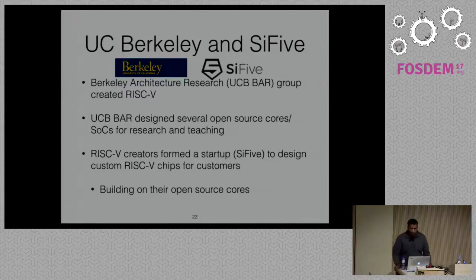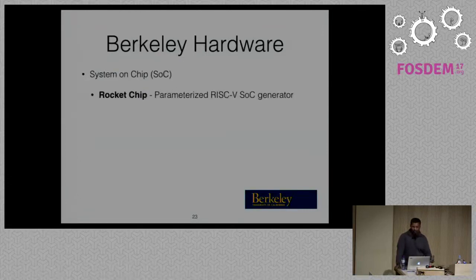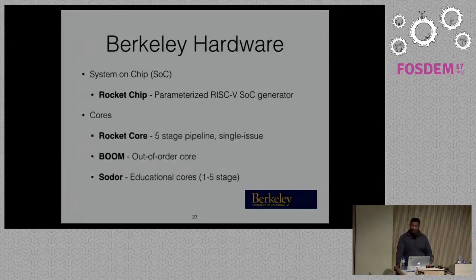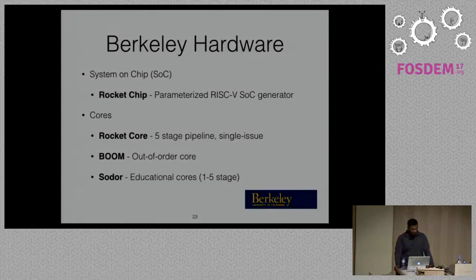Some of the Berkeley hardware available: the Rocket Chip is a parameterized RISC-V SOC generator. Because it's parameterized, you can tweak knobs like the cache hierarchy, number of cores, TLB size, and whether there's a floating point unit. You go into a config file and tweak the core to your needs. In addition, there are cores to choose from: the Rocket core is the standard five-stage pipeline single-issue core. There's also BOOM, an out-of-order research core by Chris Celio at Berkeley. Berkeley also has Sodor — educational cores from one stage to five stages, designed for simplicity in university courses. All the code is on GitHub.